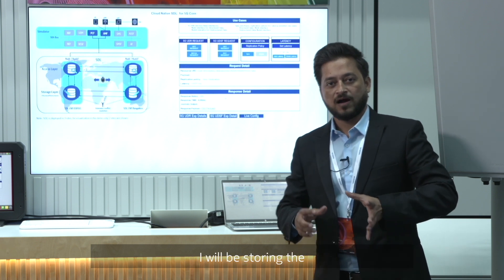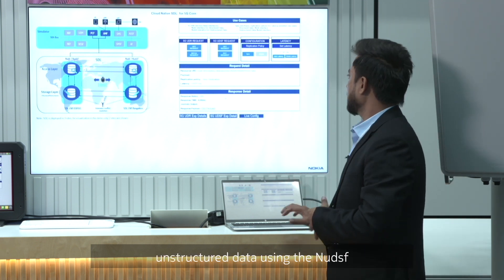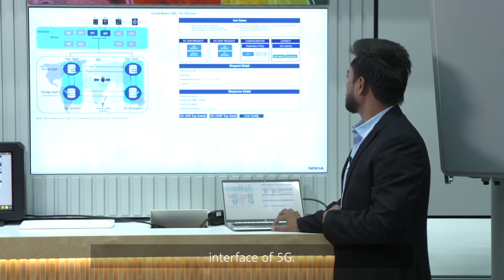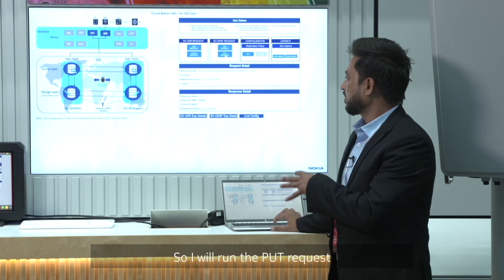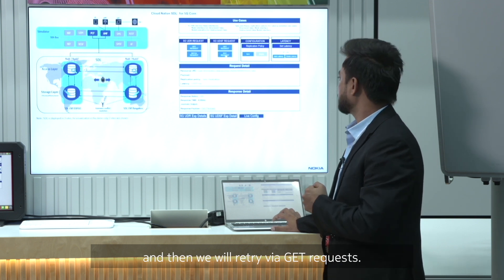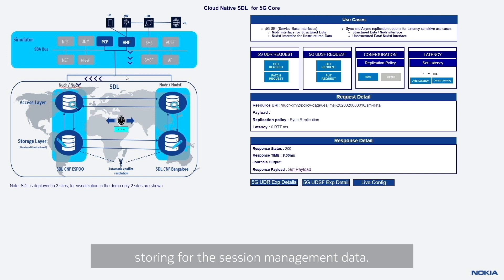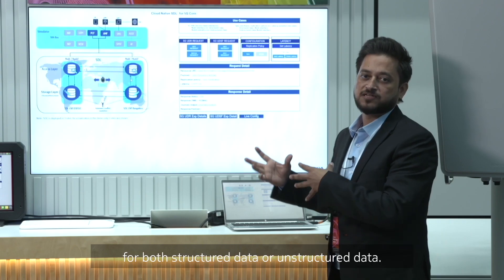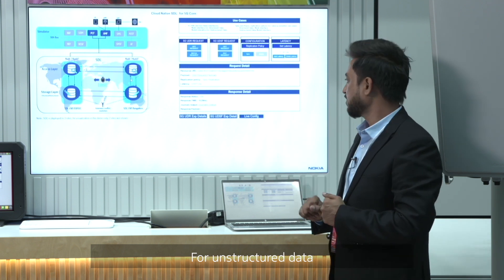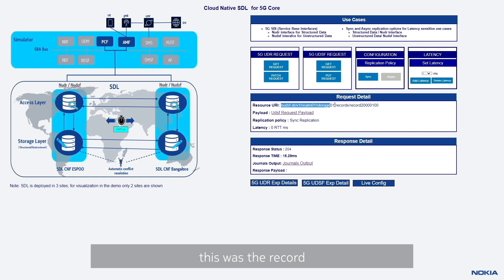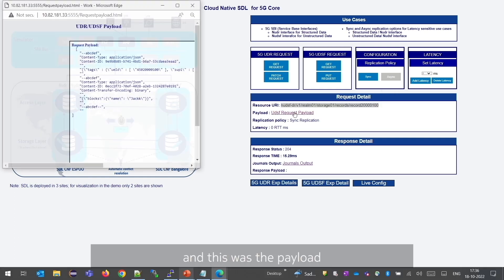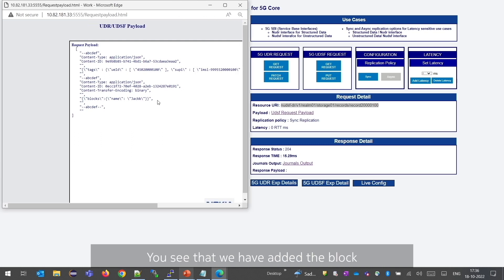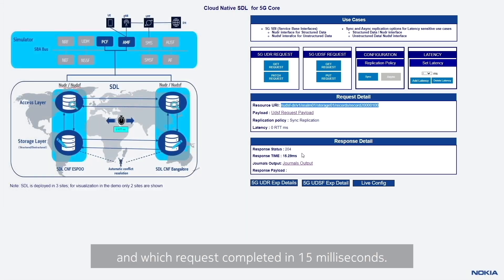Moving to the next use case, I will be storing unstructured data using the NUDSF interface of the 5G core. I will run a PUT request first to store the data and then retrieve it via GET request. The PUT request comes from AMF storing session management data, goes to the access layer, then the storage layer, replication happens, and the response is sent back. The underlying flow does not change whether it is structured or unstructured data — the underlying processing remains the same. The PUT request completed in 15 milliseconds.